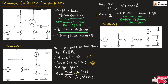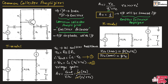This figure shows the AC equivalent model for the common collector amplifier, which is the pi model. Here, the input impedance across the base will be beta × (Re + Re'). The input impedance across the stage, measured at the input side, will be equal to R1 parallel with R2 parallel with beta × (Re + Re').